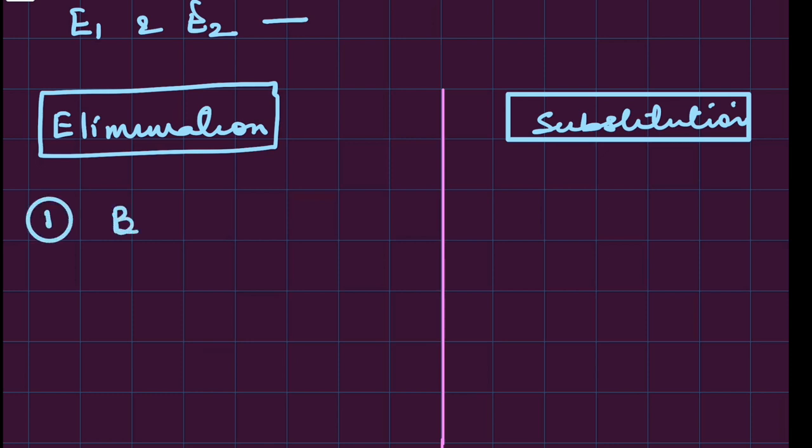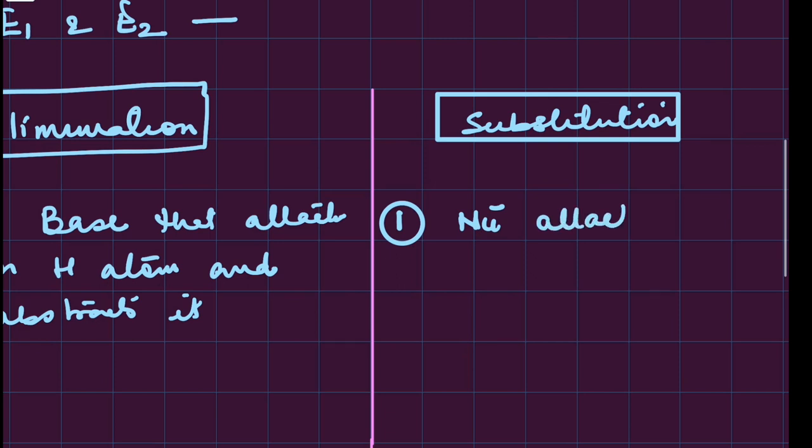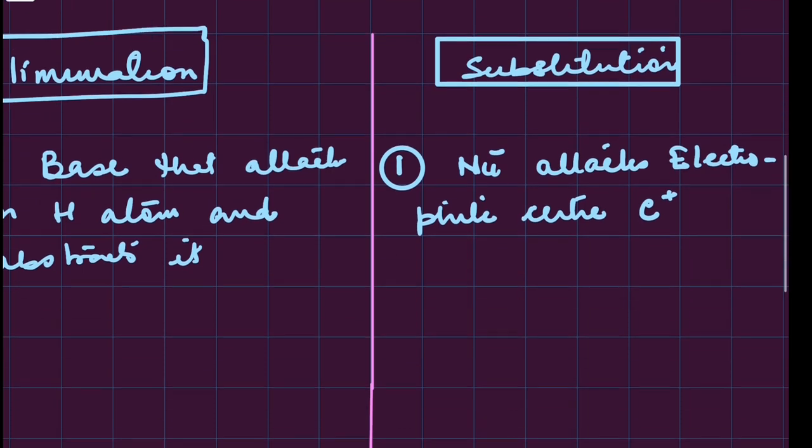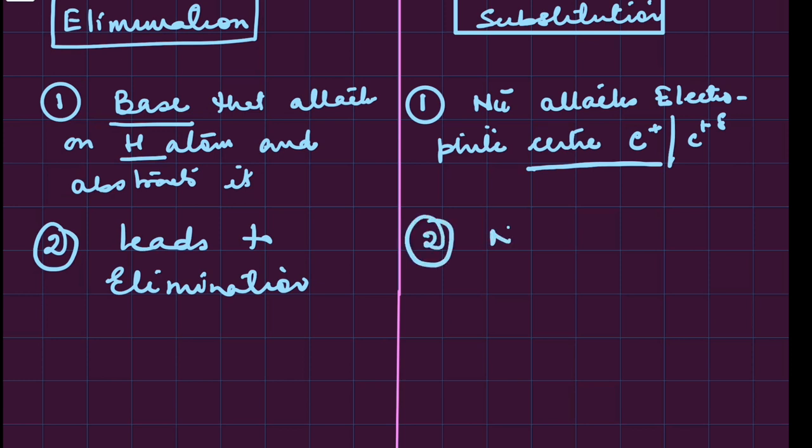In elimination, we require a base that attacks on the hydrogen atom and abstracts it. Whereas in substitution, the nucleophile attacks the electrophilic center, which is usually a carbon having partial positive charge. Always understand: nucleophile will attack on carbon having positive charge (electrophile), and base will attack on hydrogen atom. Base will always lead to elimination, and nucleophile will lead to substitution, whether SN1 or SN2.